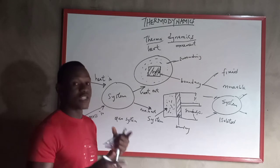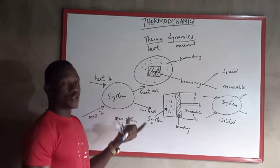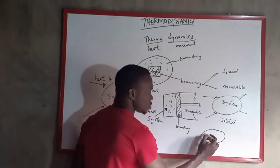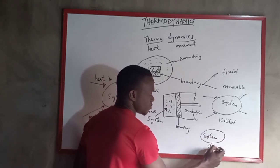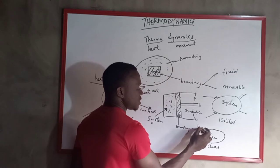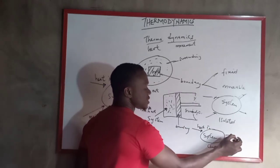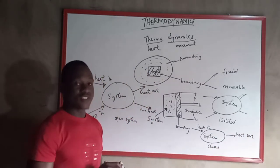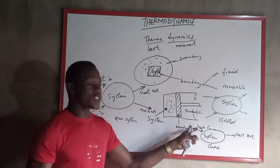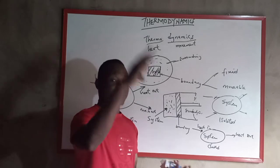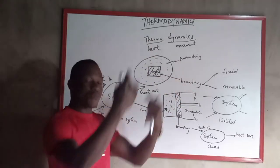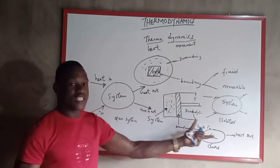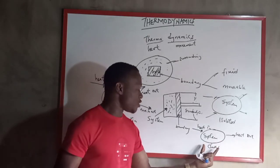The third type is the closed system. For a closed system, mass cannot go in, but heat can go in and heat can also leave the system. An example of a closed system is the Earth's crust, whereby the sun releases heat to the Earth and the Earth releases vapor back to the atmosphere, but there is no mass coming from the atmosphere into the Earth, and no mass leaving the Earth into the atmosphere — only heat is exchanged.